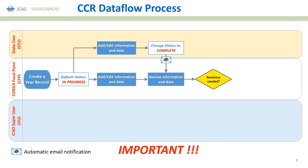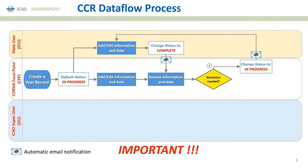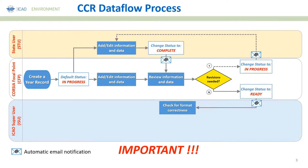Once the Corsia focal point reviews the information, they will decide whether the state user needs to add or edit more information. If so, the focal point changes the status back to 'in progress'. If there is no need for revisions, the information can be submitted to ICAO by changing the status to 'ready'. An automatic email notification will then be sent to the ICAO super user to check for format correctness. There is no mandate for the Secretariat to validate the actual correctness of information — only that it has been submitted in the correct format.